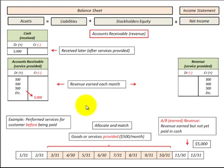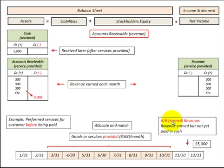What exactly is accounts receivable? For example, we perform a service for a customer or sell them a product. Looking at a timeline from March through October, say we provided goods or services at five hundred dollars a month to the customer. So we have accounts receivable earned as revenue — we've earned this five hundred dollars per month, but it's not yet paid in cash.